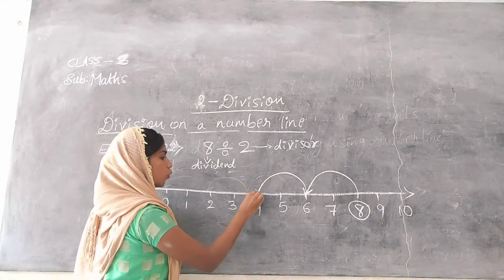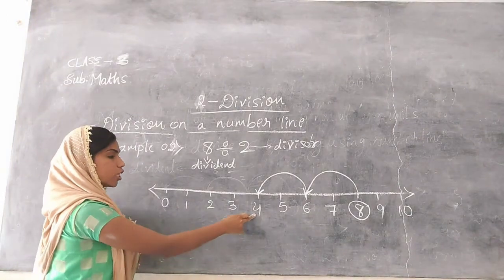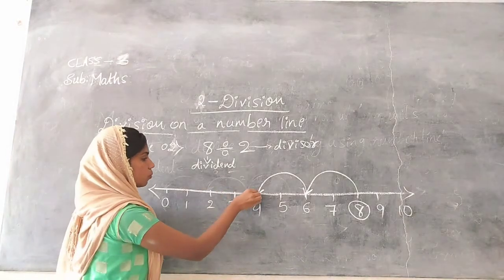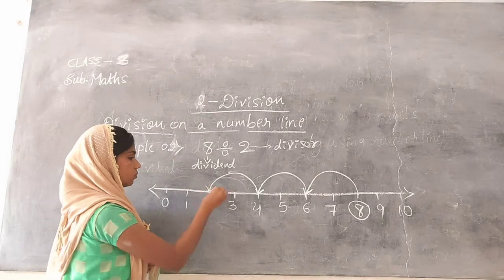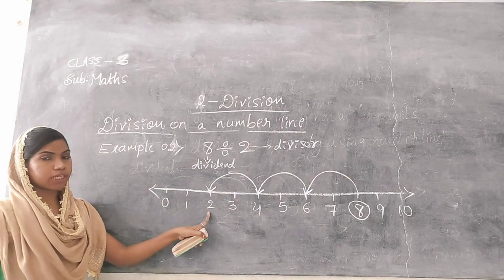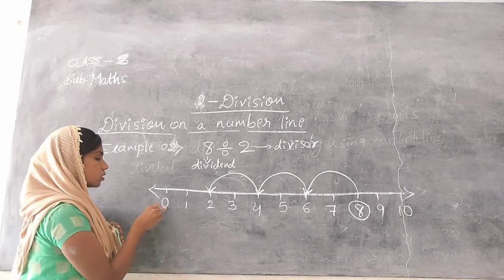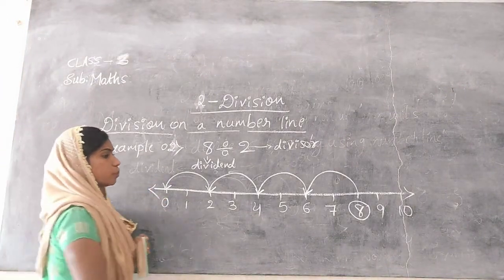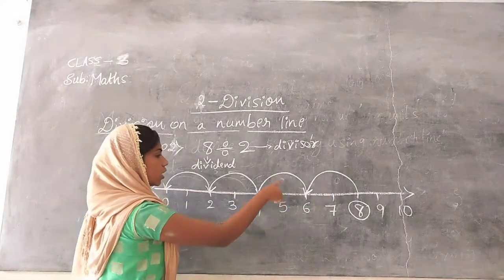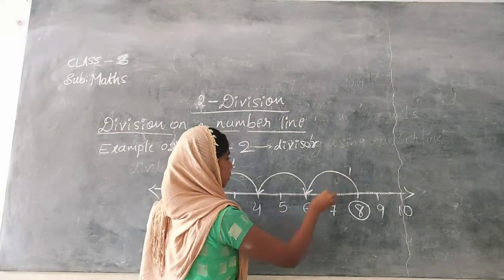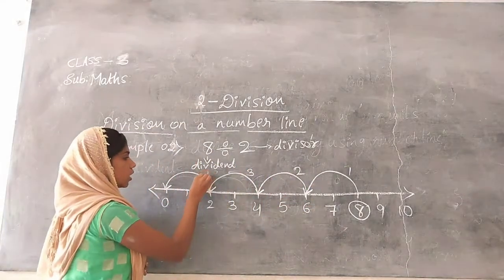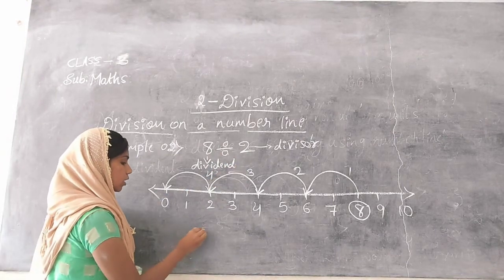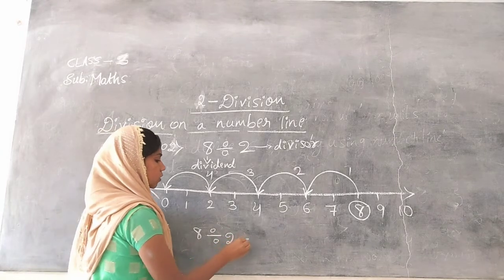Then I reach number 4. From 4, jump again but taking 2 steps: step 1, step 2 — jump again. So I jumped 1 time, 2 times, 3 times and 4 times. Therefore, 8 divided by 2 is equal to 4.